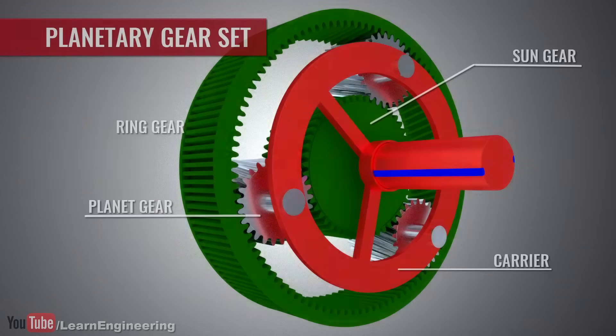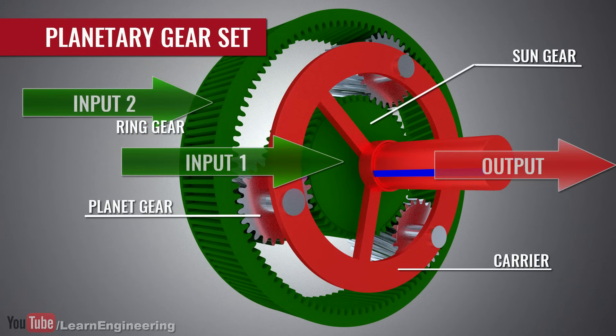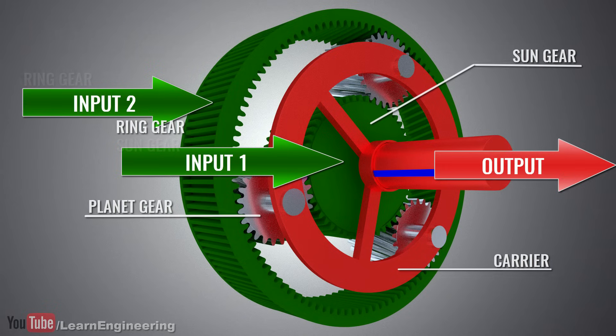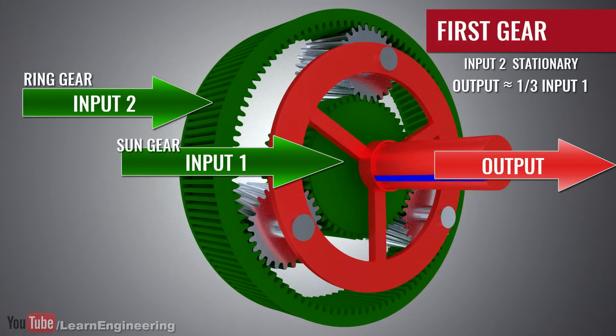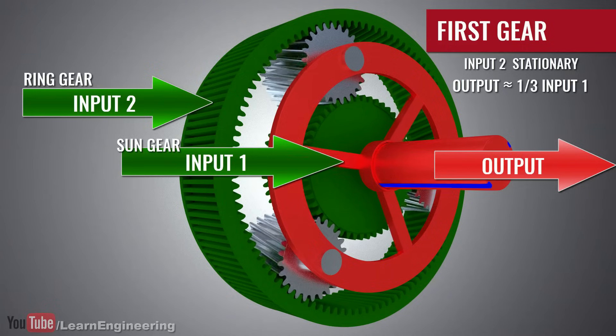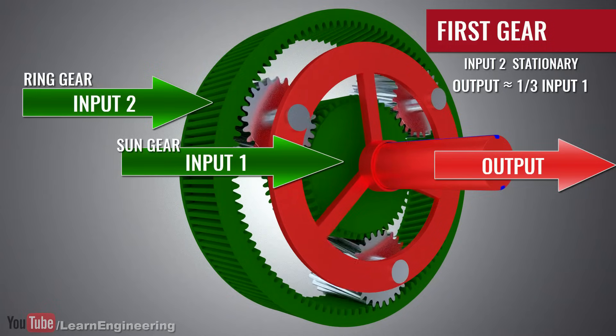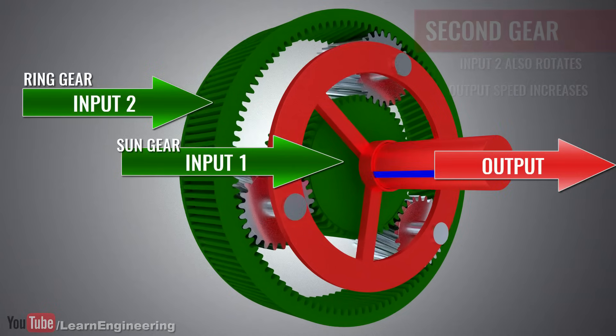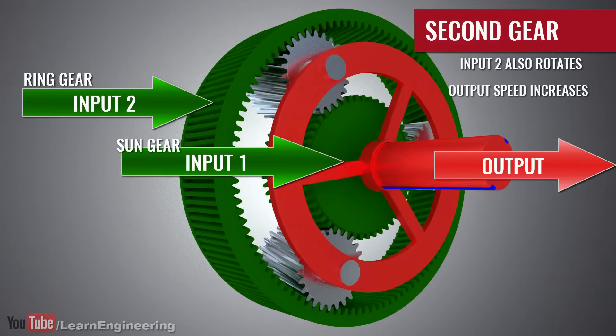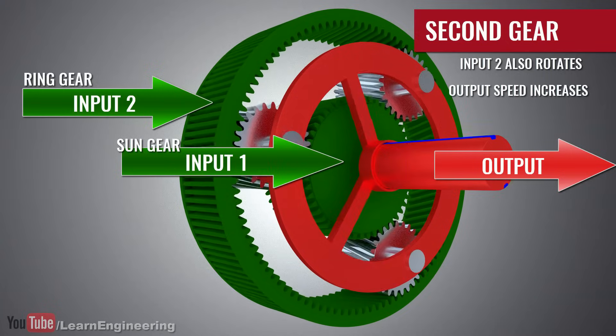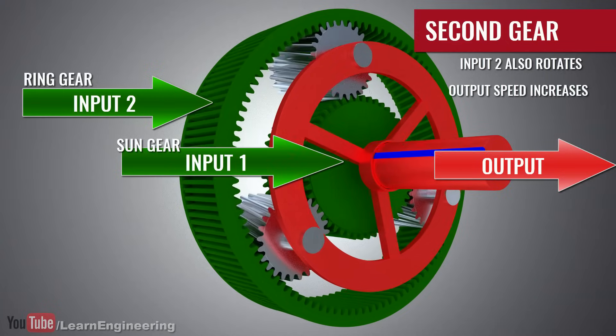A planetary gear set has two inputs and one output. If you properly understand working of the planetary gear set, you can easily understand automatic transmissions from the 2D animation. The essence of the planetary gear set is that just by giving different speeds to the ring and sun gears, you will be able to get different speeds at the output.